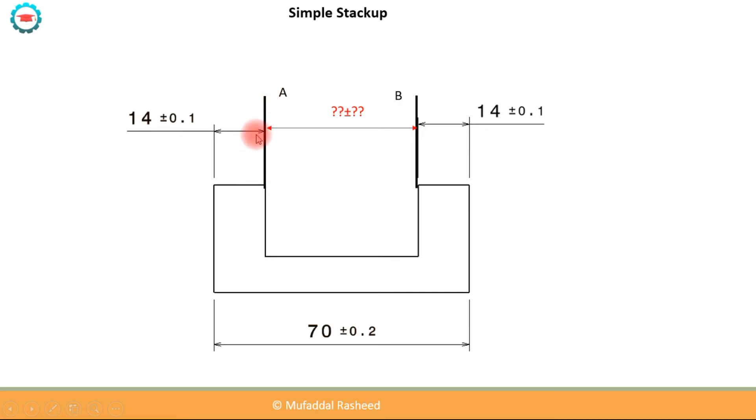From A we go towards left, so we come to this line, then we go towards right, we come to this line, and then we go towards the left again to reach at B. So this is the loop diagram starting from A towards left, then towards right, then again towards left, reaching at B.